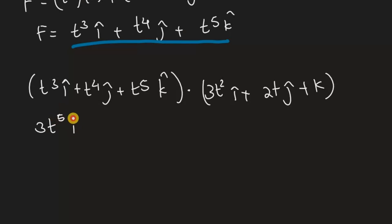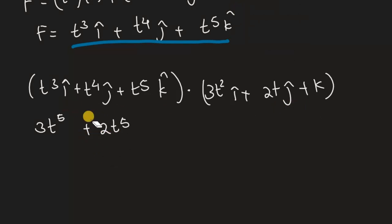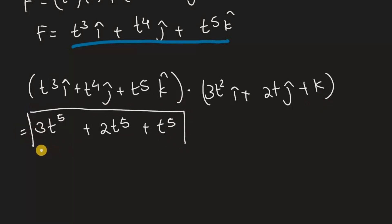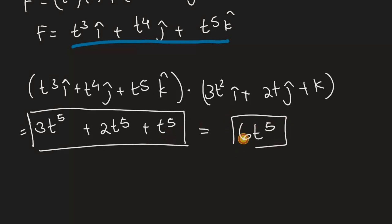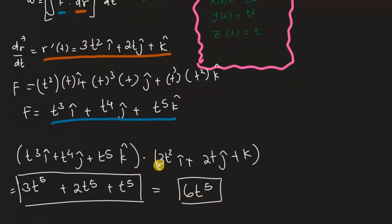Doing the dot product: t to the power of 5 times 3 gives 3t to the power of 5; plus t to the 4th times 2t gives 2t to the power of 5; plus t to the 5th times 1 gives t to the power of 5. All three terms have the same exponent, so we add the coefficients: 3 plus 2 plus 1 equals 6, giving 6t to the power of 5. This is the function you get after computing F dot dr.